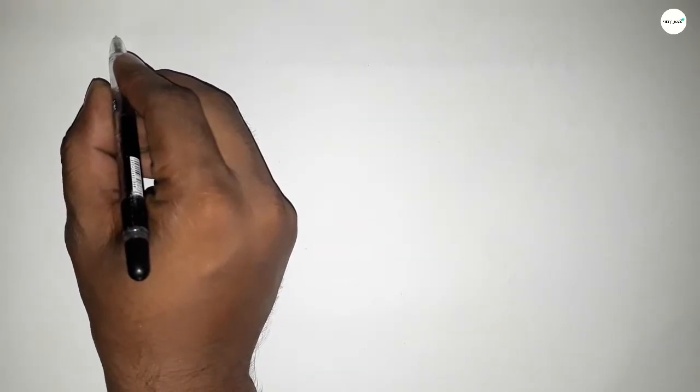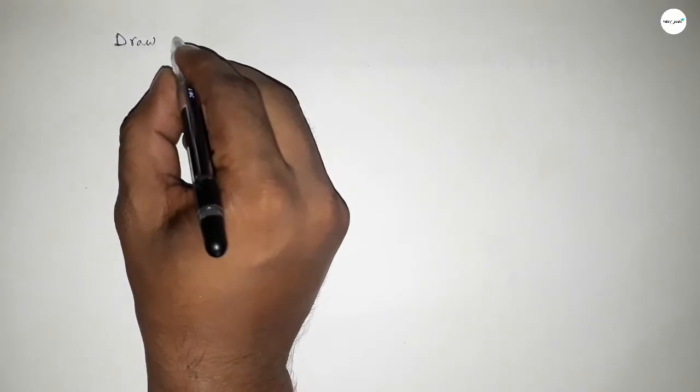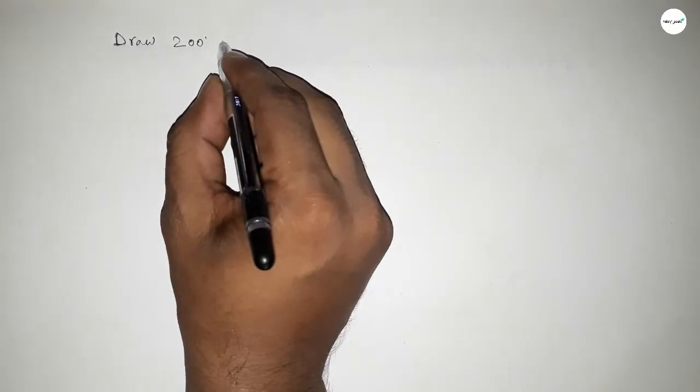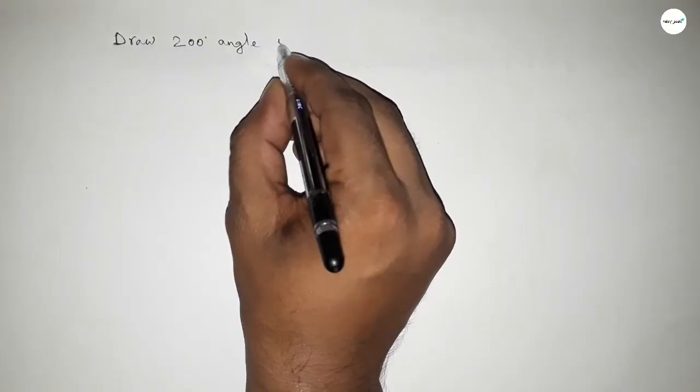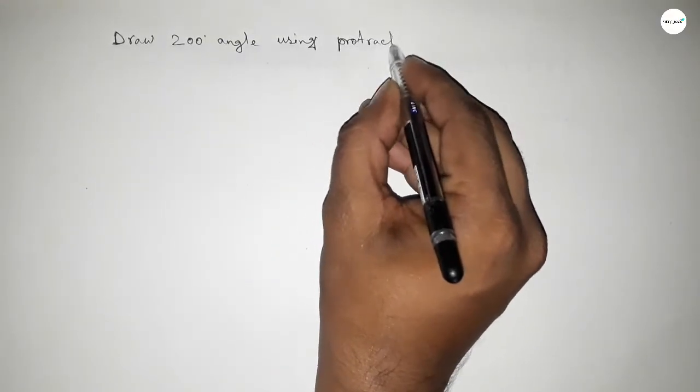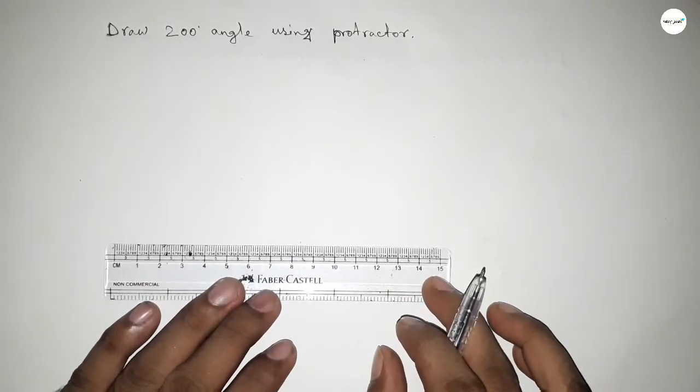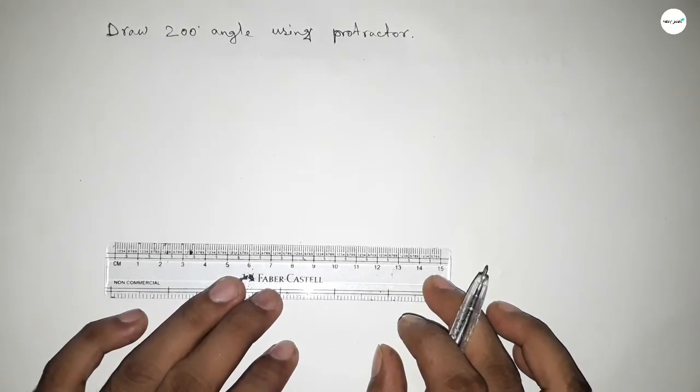Hi everyone, welcome to SSR classes. Today in this video we have to draw a 200 degree angle by using a protractor. So constructing a 200 degree angle by using a protractor, let's start the video. First of all, drawing a straight line.